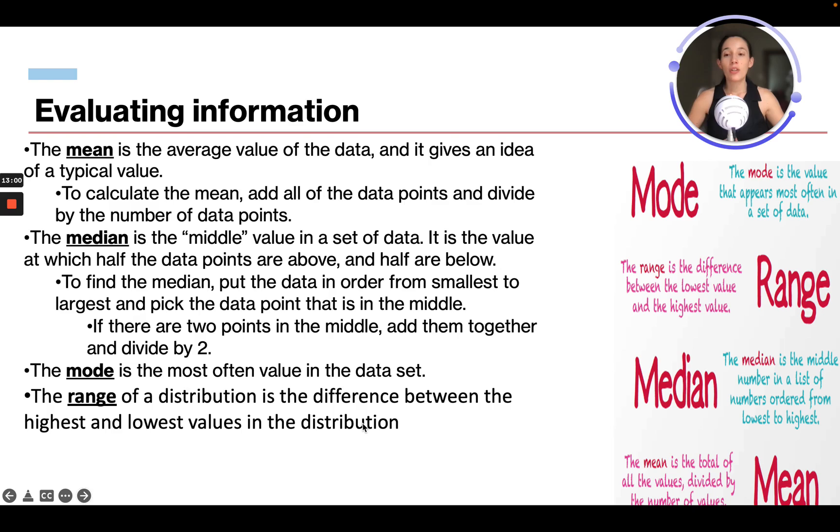So right here, the median is the middle number in a list of numbers ordered from lowest to highest. Then the mode. The way I like to remember mode is it's spelled M-O-D-E. So M-O stands for most often. This is the value that you see the most often in the data set.